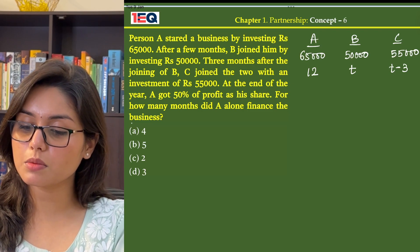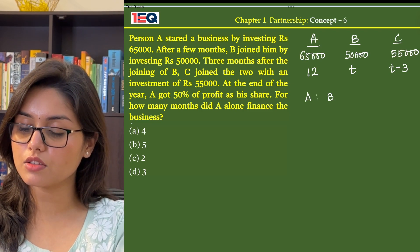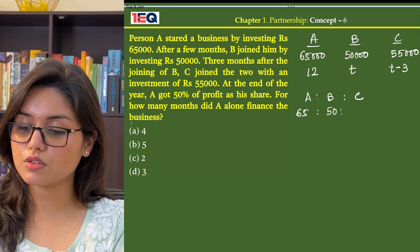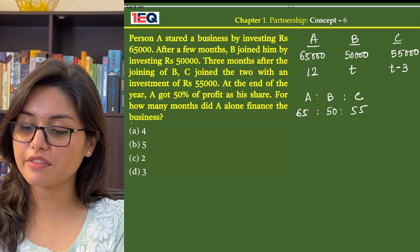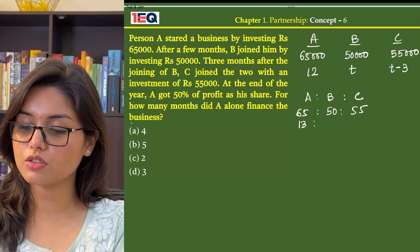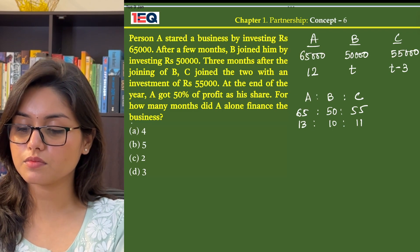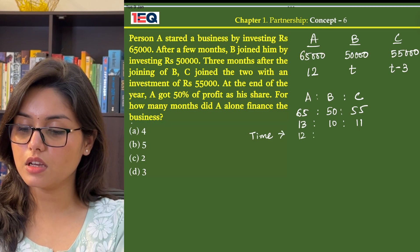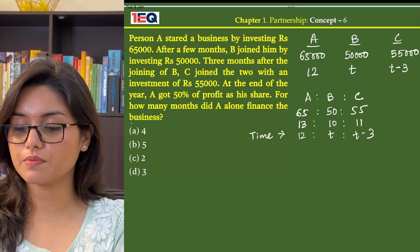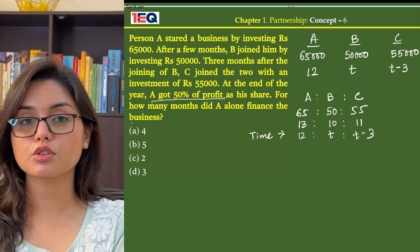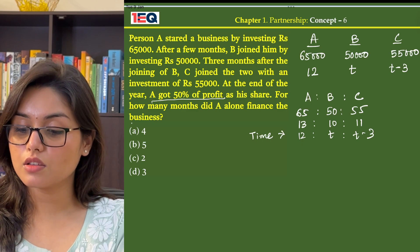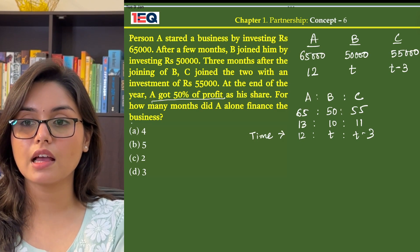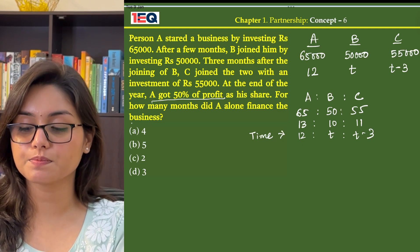Now, their ratios — A to B to C — will be 65 to 50 to 55. On dividing by 5, we get 13 to 10 to 11, and their time is 12 to T to T minus 3. A got 50% of the profit, meaning 50% belongs to A and the rest 50% has B and C combined.